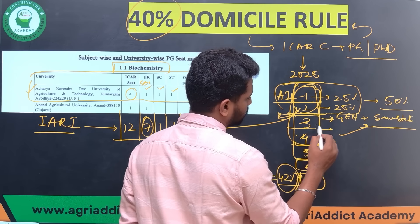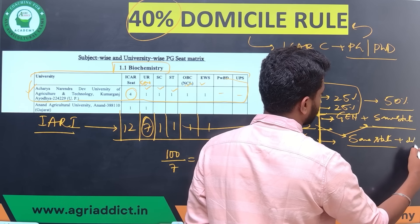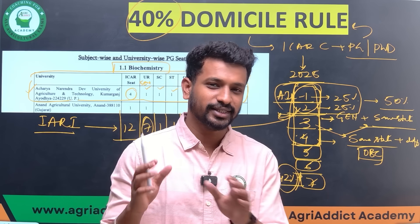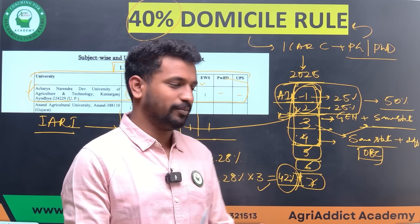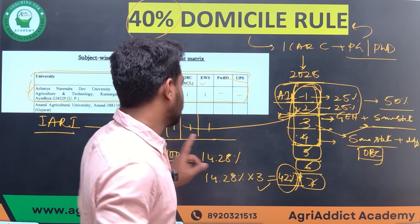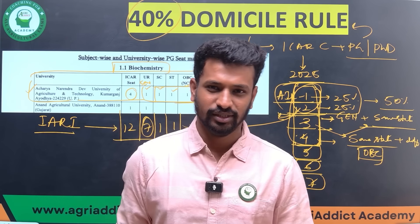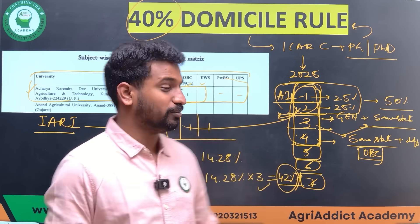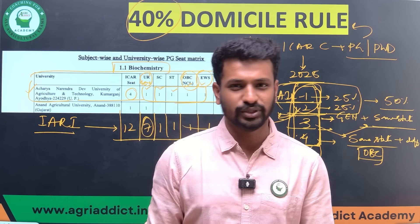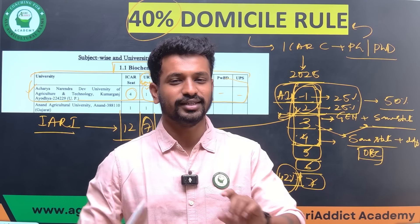However, if the third-ranked student belongs to the same state but a different category — say OBC — then he will get the seat under the OBC category at IARI. This domicile rule applies on a category basis: general, OBC, EWS, SC, and ST are calculated separately. For SC and ST, there is usually only one seat per university, so only the all-India first ranker in that category gets it. The major concern is for unreserved, OBC, and EWS categories, where there are typically two to five seats available.